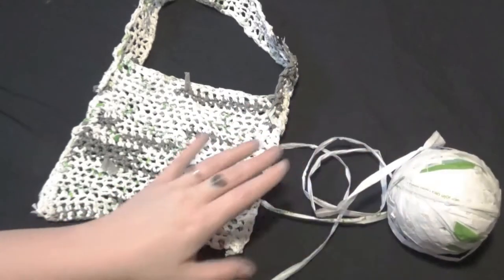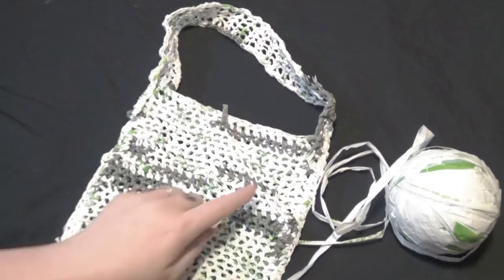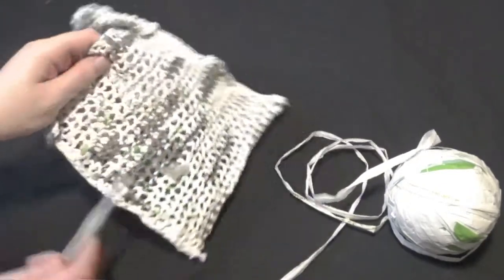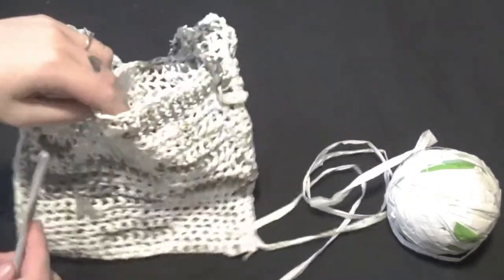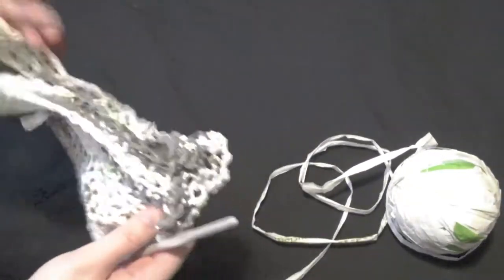Now the stitches we are going to need to create this are a chain and that is what we start with along the top, and this is folded over and stitched together. So we are going to build one long sheet and work it together.